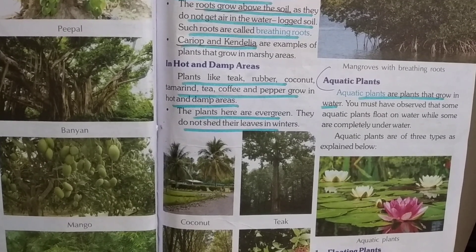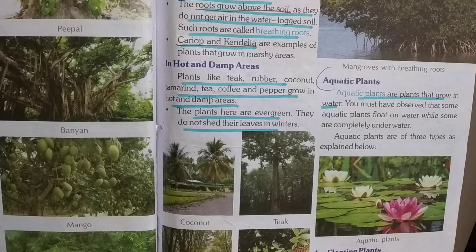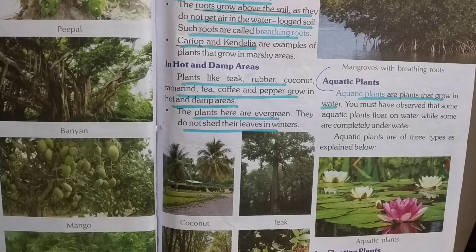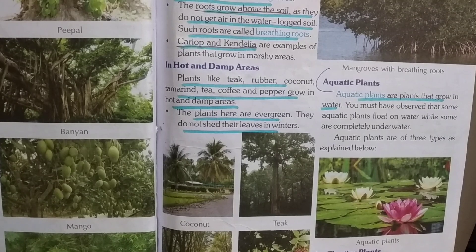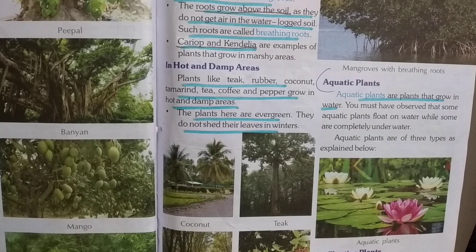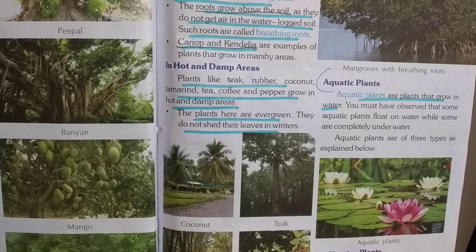Such roots are called breathing roots. For example, calliope and candelia are examples of plants that grow in marshy areas.